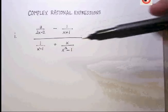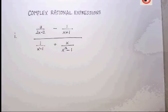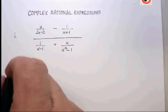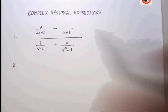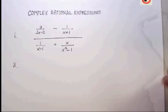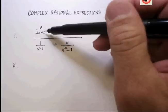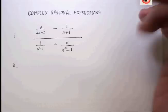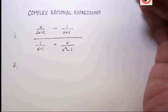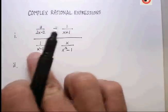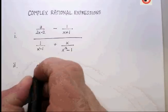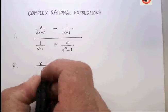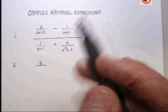So how do we do that? One of the things that you probably want to consider when simplifying one of these complex rational expressions is that you need to factor each of the polynomials so that you can determine what are the common denominators for each of the individual rational expressions.